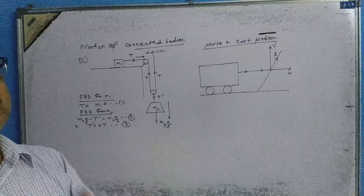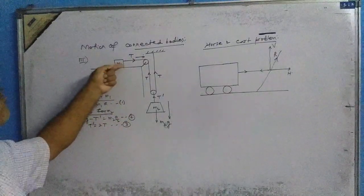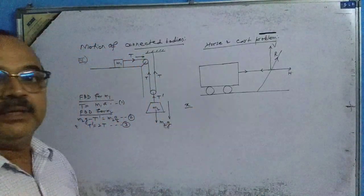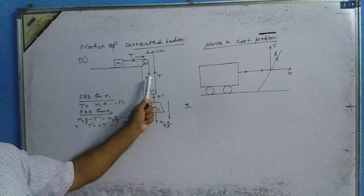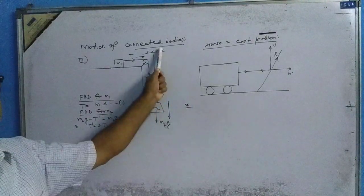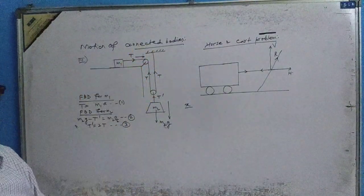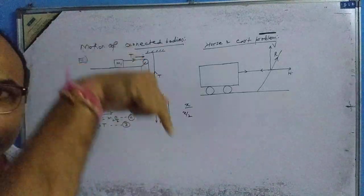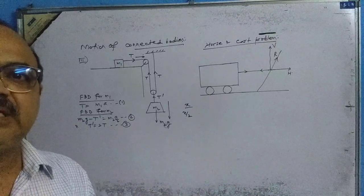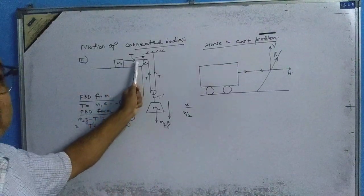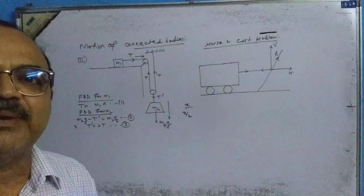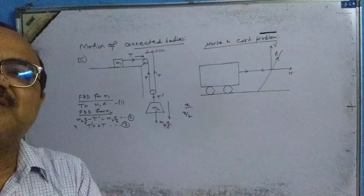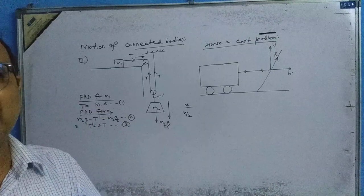Now, suppose when m2 goes down, m1 moves to the right by distance x. Then the whole movable pulley system shifts by x, meaning both segments of the string on either side of the movable pulley each move by x/2. Therefore, m2 will move down by x/2. This is a very important point: if m1 moves by x, then m2 moves down by x/2.